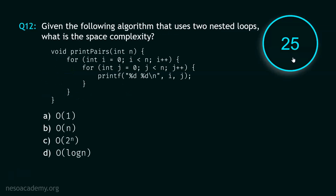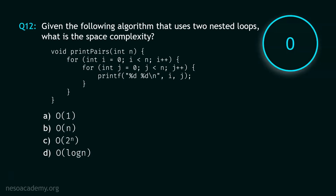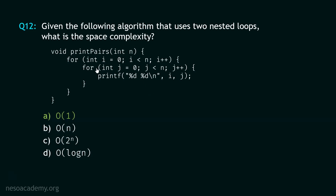And your time starts now. Stop. The correct option is option A: O(1). It is clear from this function that there is only one function call, hence there is only one activation record in the stack. We do not have any complex data structure like an array in this function. Therefore, the overall space complexity is O(1), which is constant.